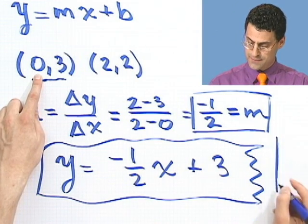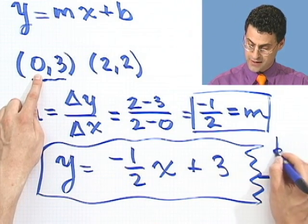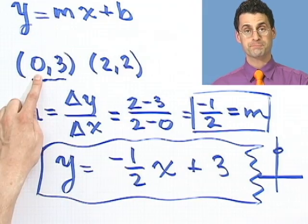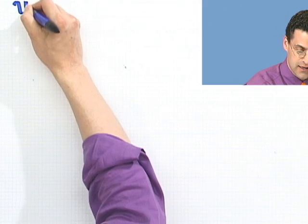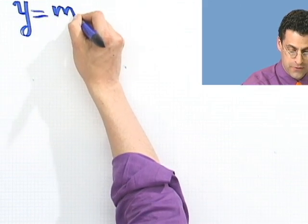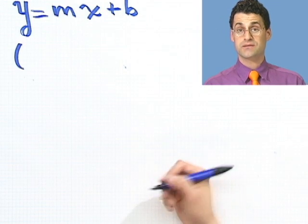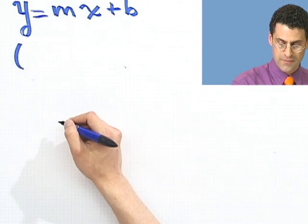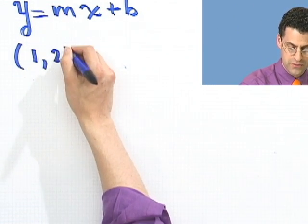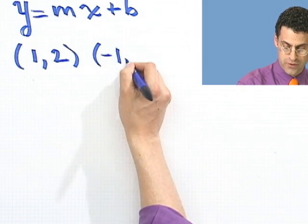Since this is (0, something), that's the y-intercept. So I can just immediately say y equals -1/2 x plus 3. That was really easy because they gave us the y-intercept. We just had to realize that was the y-intercept because x is 0. Let's try one where the poser of the question wasn't so friendly.